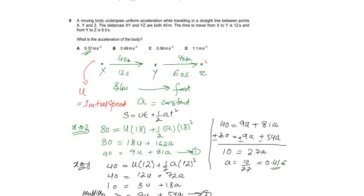So S equals UT plus half AT squared will be converted into 80 equals U times 18 plus half A times T squared. So it will be 80 equals 18U plus 162A. And we simplify it, we will get 40 equals 9U plus 81A.